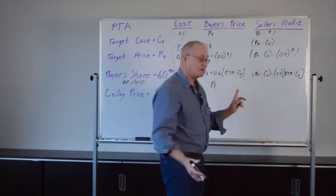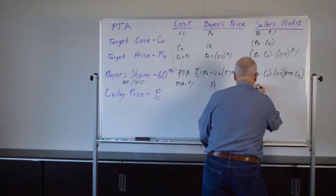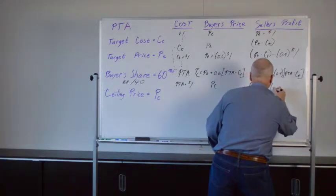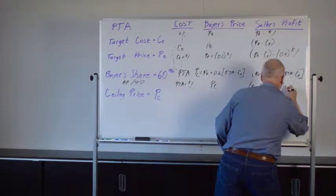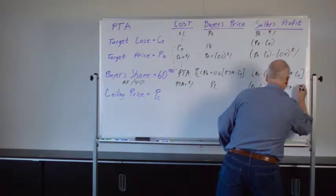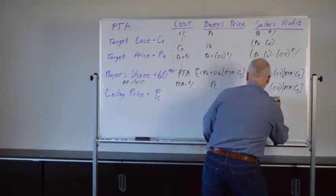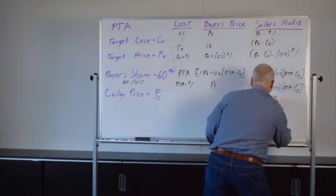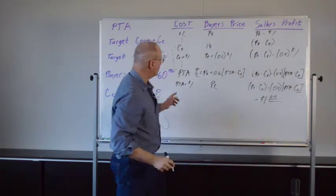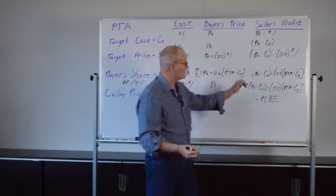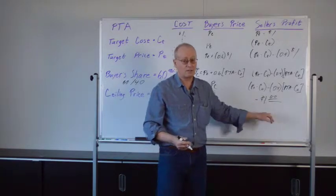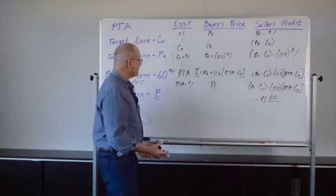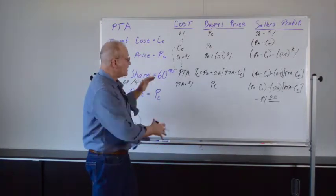The seller's profit is P sub T minus C sub T minus 40% of that difference from the PTA minus the C sub T minus that entire dollar. This entire dollar of cost overrun now is falling entirely on the seller as a reduction in his profit or eventually as an increase in his losses. So that's how this works.